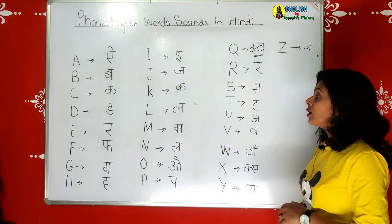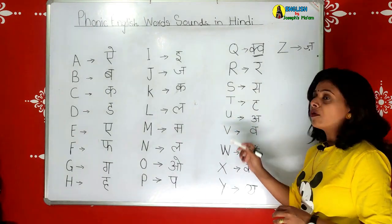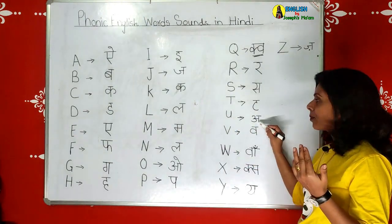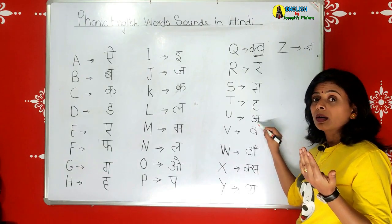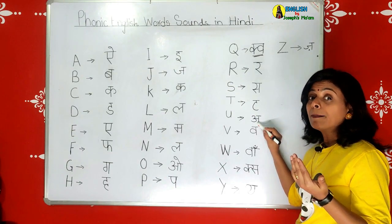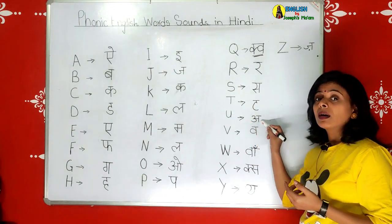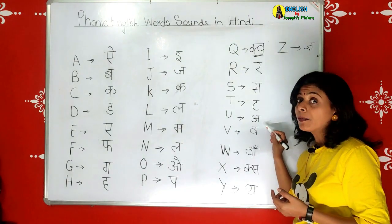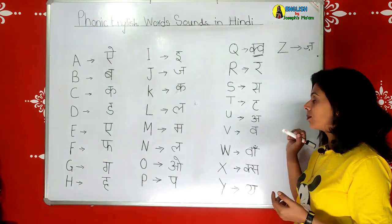The next is U. U is for umbrella. The Hindi phonic is 'a' - umbrella, umbrella. U - 'a' - umbrella.